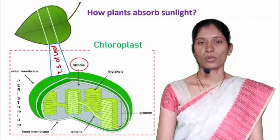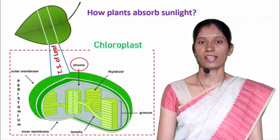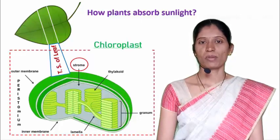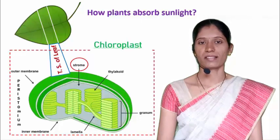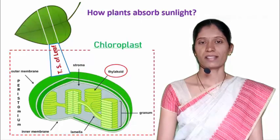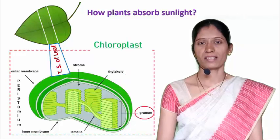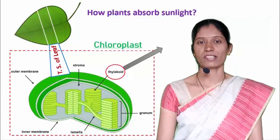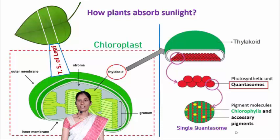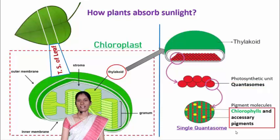The second region is the stroma. The chloroplast peristomium encloses a dense, colorless, gel-like matrix called stroma. The stroma region contains photosynthetic enzymes as well as DNA, RNA and ribosomes. The third region of the chloroplast is the thylakoid. Thylakoids are small, flat, sac-like bodies suspended in the stroma region. Thylakoids are usually arranged one above another like a stack of coins, and this stack arrangement is called a granum. The inner membrane of the thylakoid contains a number of small dome-shaped bodies called quantasomes, which are also considered as photosynthetic units.